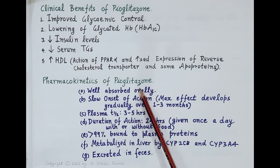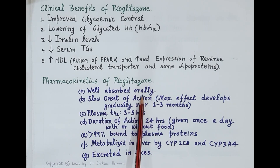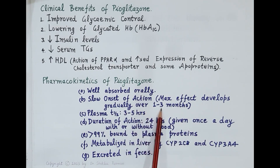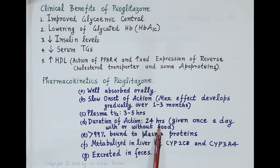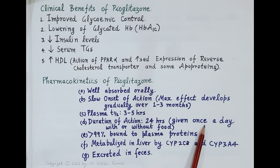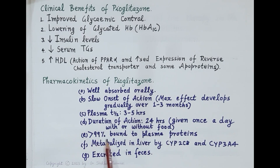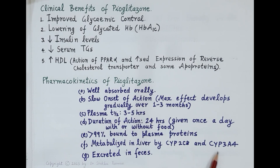Now let's study the pharmacokinetic profile of pioglitazone. Pioglitazone is well absorbed orally. It has a very slow onset of action and maximum effect develops gradually over one to three months. Its plasma half-life is three to five hours and its duration of action is 24 hours. Since its duration of action is 24 hours, it is given once a day with or without food. Pioglitazone is more than 99% bound to plasma proteins and is metabolized in the liver by cytochrome enzymes CYP2C8 and CYP3A4. It is excreted in the feces.